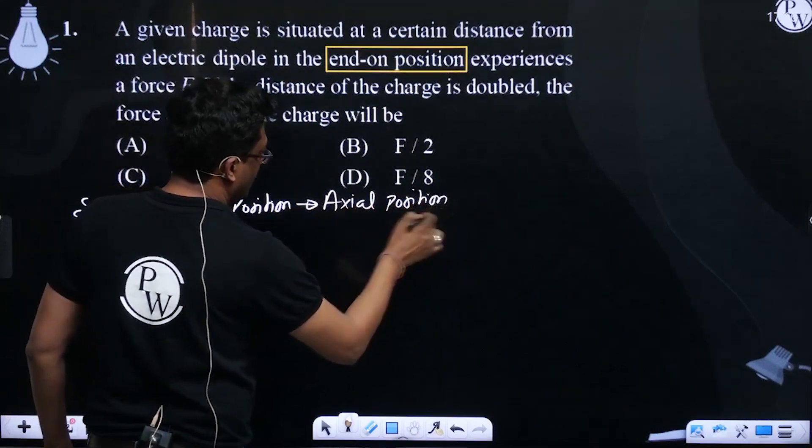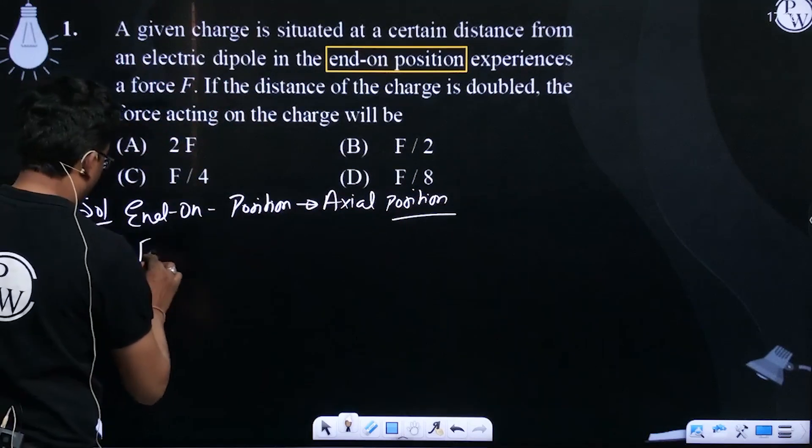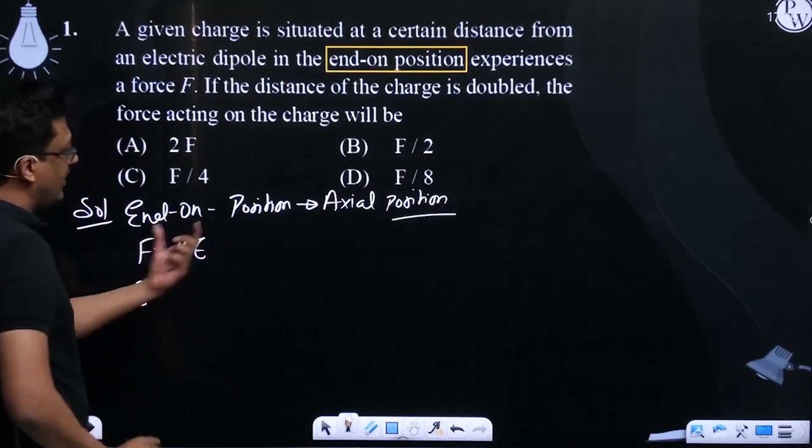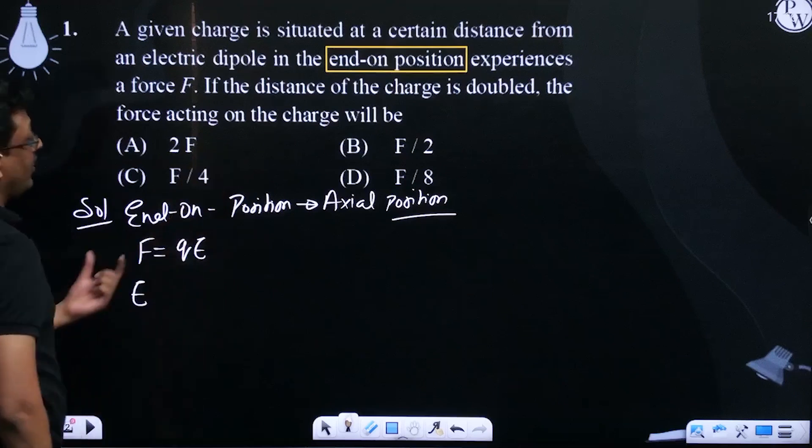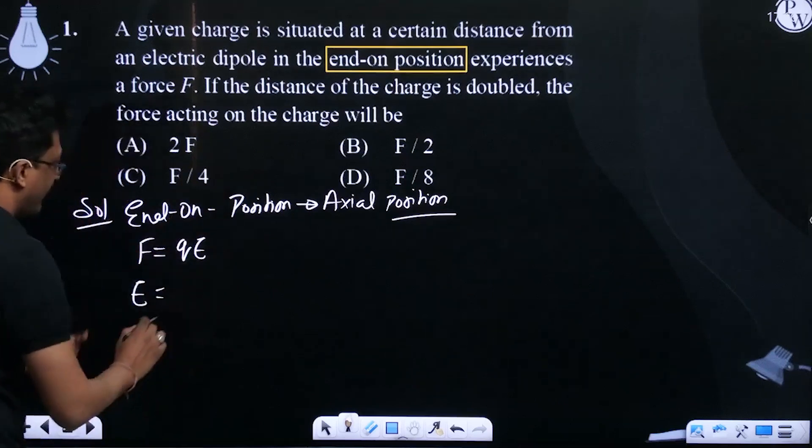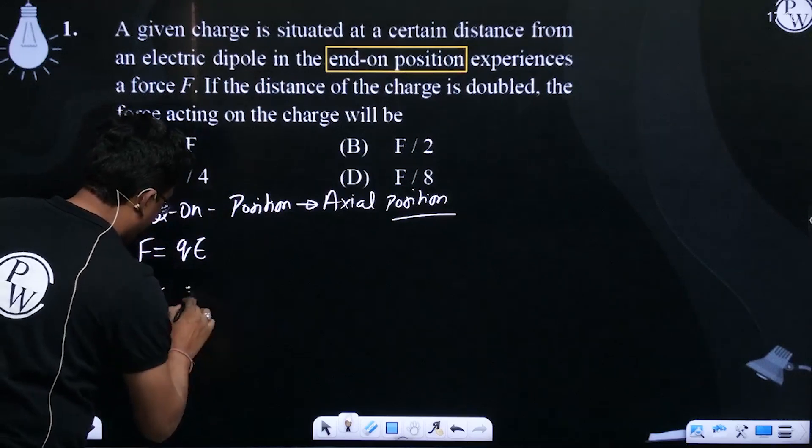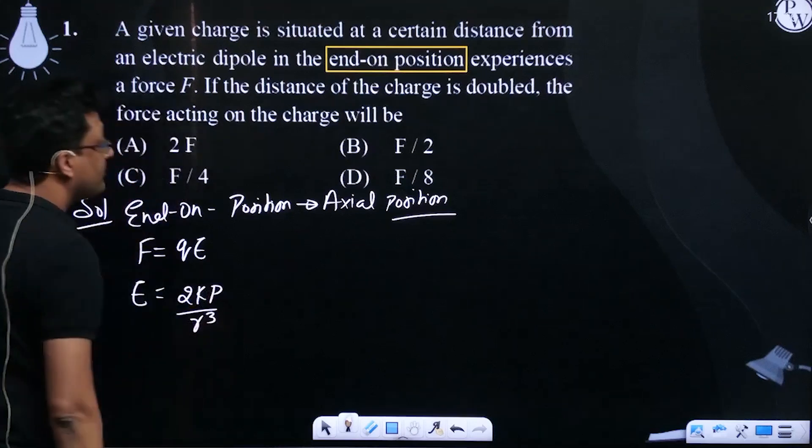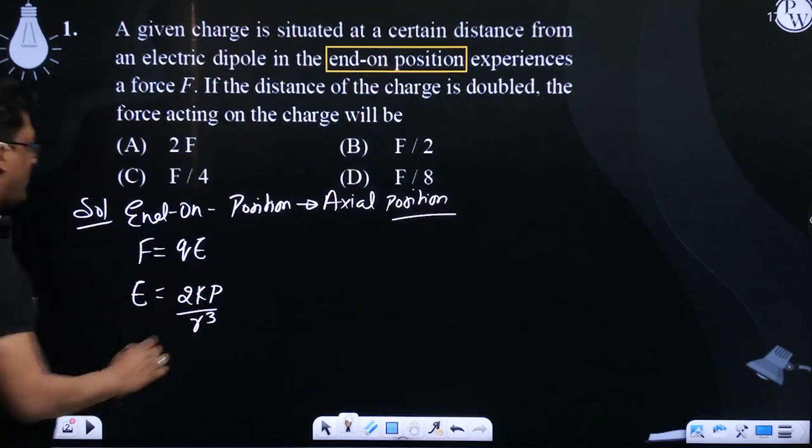So axial position and we all know that force will be equals to QE. And here axial position or axial point or axial position dipole, which is electric field, which is 2Kp by R cube, right? 2Kp by R cube.